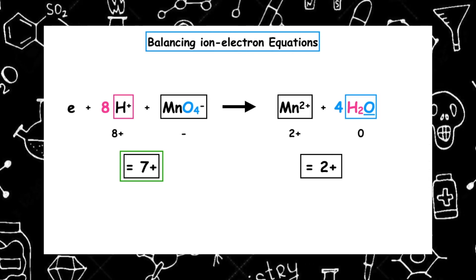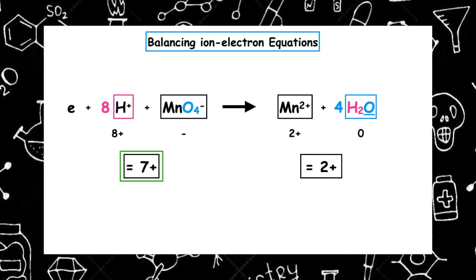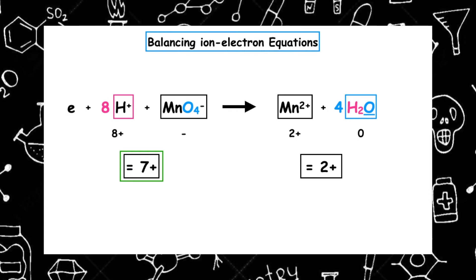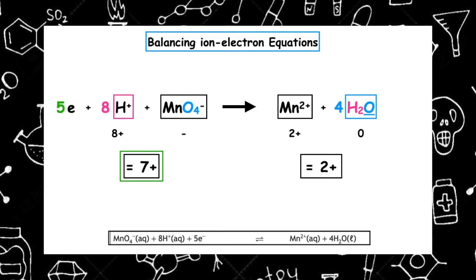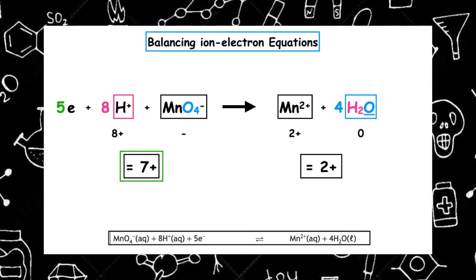Remember, electrons are negatively charged, so that's a takeaway. What number of electrons do I need to add to get seven down to two? We're going to have to add five electrons. If you want to double-check your answer, you can use page 13 of the Higher Chemistry Data Booklet, which gives us the balanced equation we've worked out.